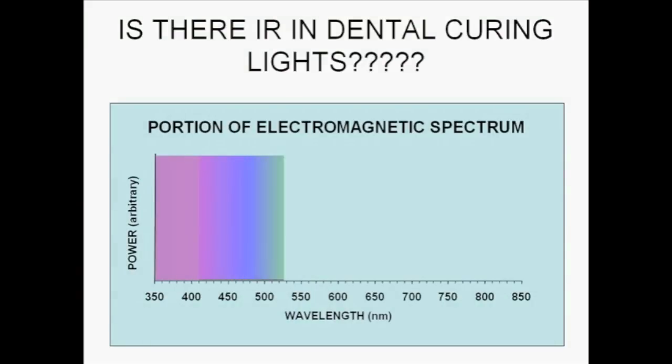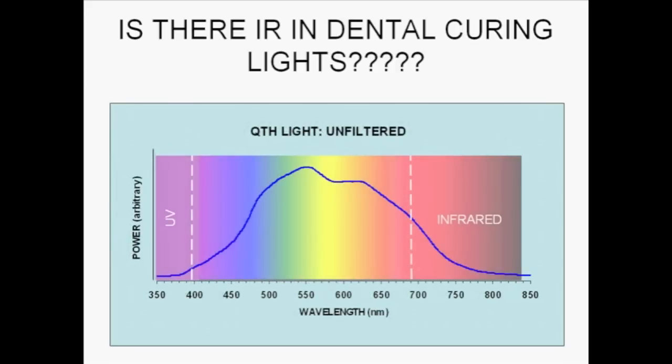Thus the question arises, is there infrared light emitted from dental curing lights? Here we see a schematic showing the wavelength profile of radiant energy below, within, and above that of visible light. This graph presents the spectral output of an unfiltered quartz tungsten halogen source.